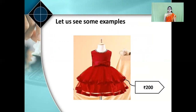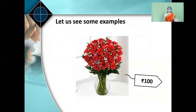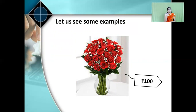One more example — a bouquet. If any guests are coming to your house and you go to purchase a bouquet with your father, there will be a tag like this on the bouquet — rupees 100. What does that mean? That is the price of that bouquet. If your parents give rupees 100 to the shopkeeper, then the shopkeeper will give you the bouquet. The amount given on the tag is the value of that bouquet.